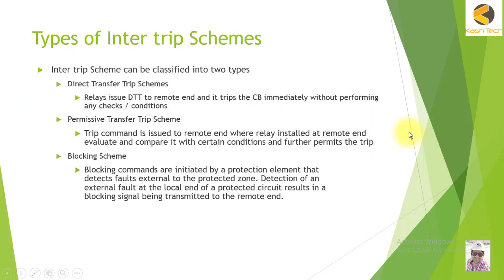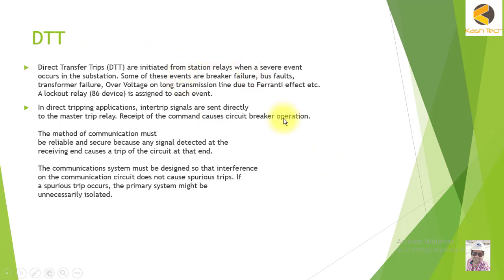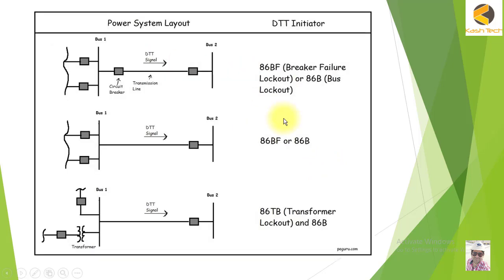I will explain the different types of intertrip schemes. For example, there are Direct Transfer Trip (DTT) schemes where we don't need any communication approval — it just trips directly to the remote end. Then there is the Permissive Transfer Trip scheme and the Blocking scheme. We will study DTT in detail and explain it using diagrams.